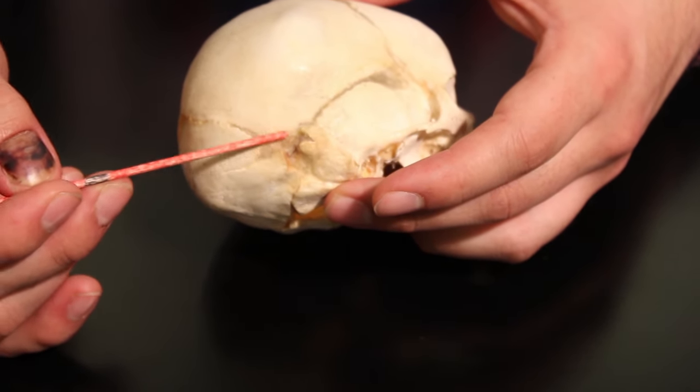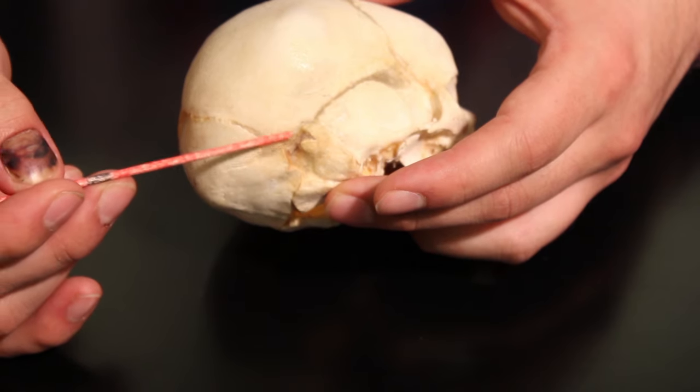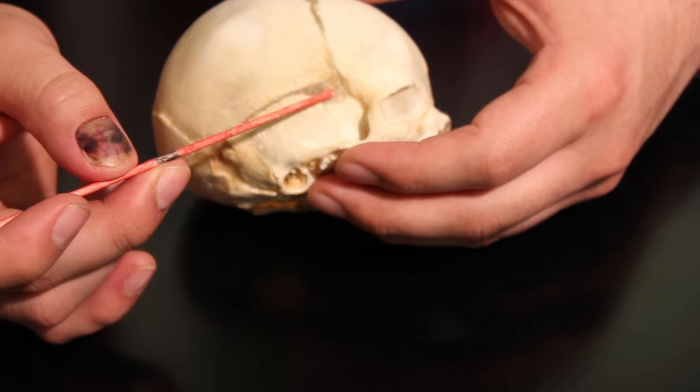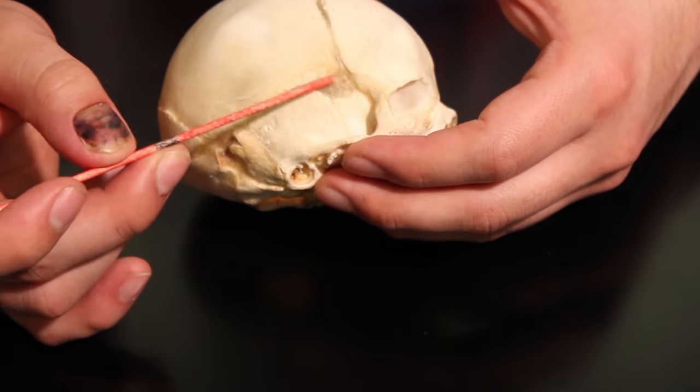Over here in the back part right there, that's going to be called the mastoid fontanelle. That's our mastoid fontanelle. And the last fontanelle over here is going to be called the sphenoid fontanelle.